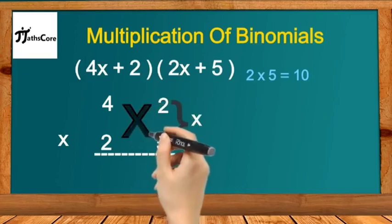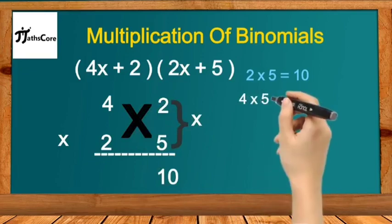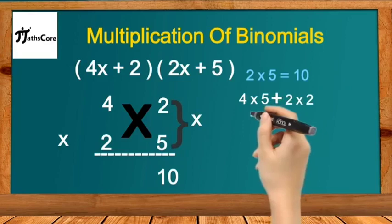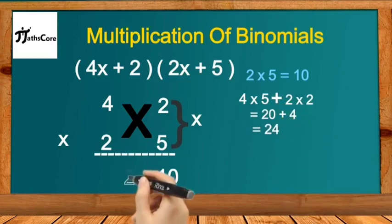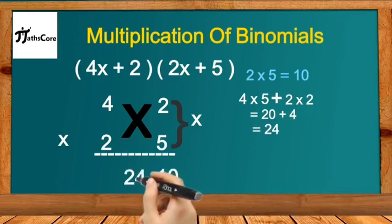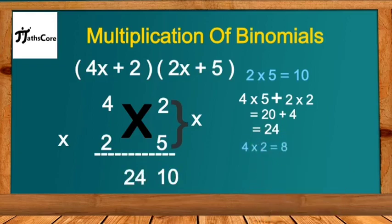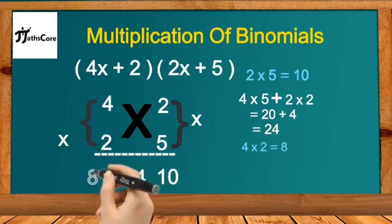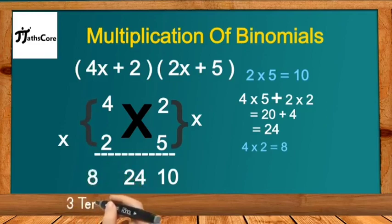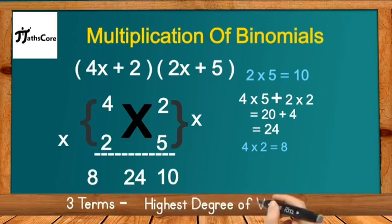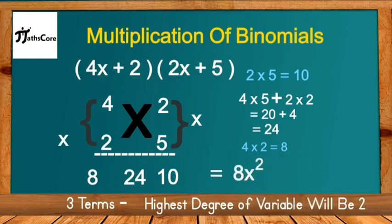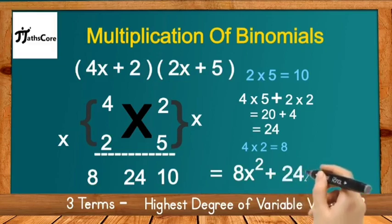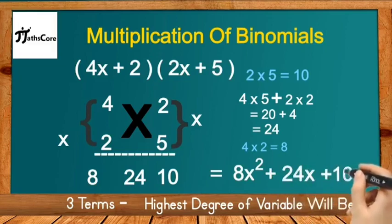Next, do the cross multiplication and addition of unit and tens place numbers: 4×5 + 2×2 = 20 + 4 = 24. Write down 24 in the middle. Then multiply the tens place numbers: 4 multiplied by 2 is 8. Write 8 at the leftmost side. So we have three terms: 8, 24, and 10. Written as a polynomial with highest degree 2: 8x² + 24x + 10, where 10 is the constant term.